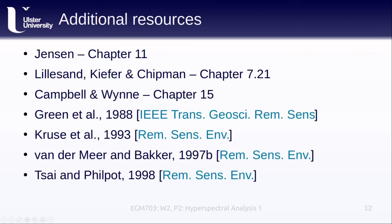You can read more about the topics we've discussed here in the textbooks. Jensen, Chapter 11, Lillesand, Kiefer & Chipman, Chapter 7.21, or Campbell & Wynne, Chapter 15. I've included links to articles referenced in this lesson, including the Green and others paper on minimum noise fraction reduction, the Kruse and others paper that covers spectral angle mapping, the van der Meer and Bakker paper on cross-correlogram spectral matching, and the Tsai and Philpot paper on derivative analysis in hyperspectral remote sensing.